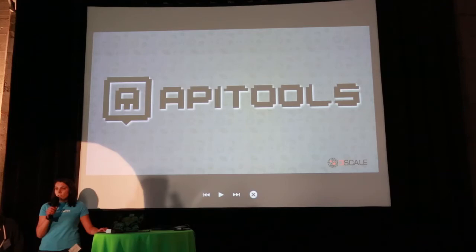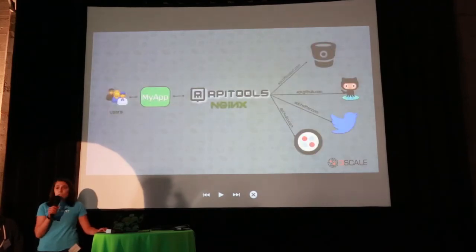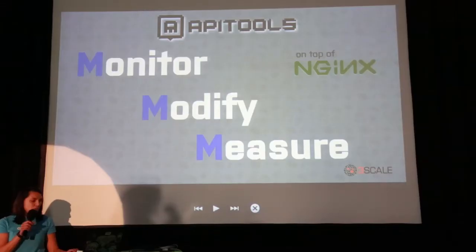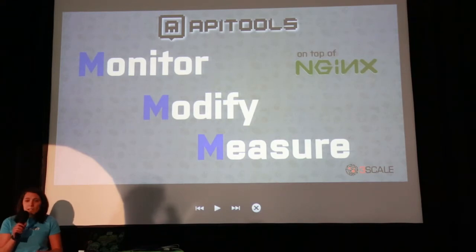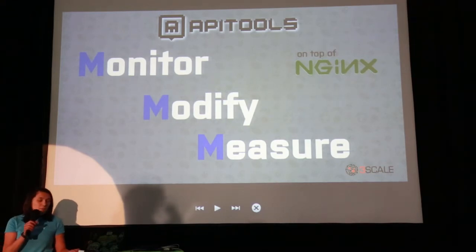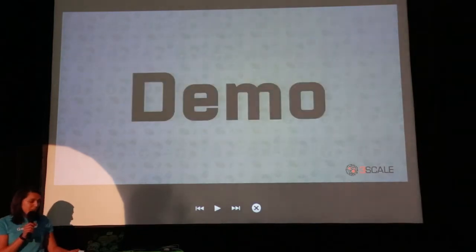So for this reason, in order to solve this problem, we've created API Tools. API Tools is a service addressed to developers and operation teams. It's basically a backend proxy between your app and the APIs that you're using, and it's built on top of Nginx — and this is where the magic happens. API Tools allows you to monitor, modify, and measure what's going on from one single place. We're going to give out invites at the end if you're interested.